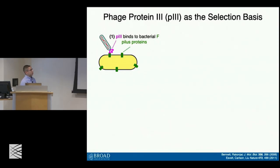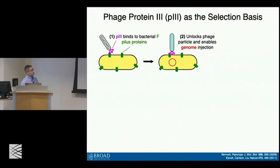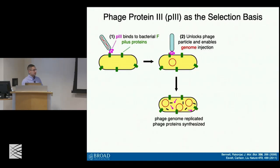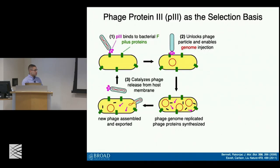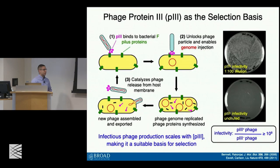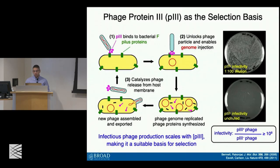P3 is the so-called minor coat protein on the surface of the virus. It interacts with pilus proteins on the surface of the E. coli cell, unlocking the phage particles and enabling the phage genome to enter the host cell. Once inside, the central dogma does its part — the phage genome is replicated, proteins are made, and then P3 regulates the step wherein the phage is excised from the membrane to result in new progeny viruses. Phage that have P3 compared to ones that don't demonstrate a very large dynamic range, enabling us to use P3 as a suitable basis for selection.